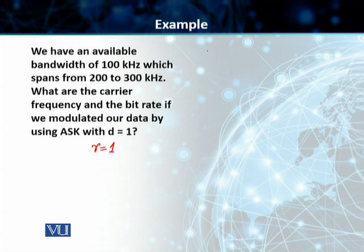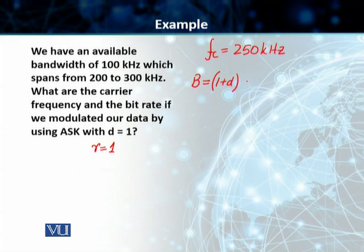The middle of the frequency is 250 kHz, so our carrier frequency is going to be 250 kHz. Now we have the formula of the bandwidth for ASK, which is (1 + D) times the signal rate. Bandwidth is proportional to the signal rate. Inserting the value of D, we come out with (1 + 1) times S, so your bandwidth is equal to 2S.